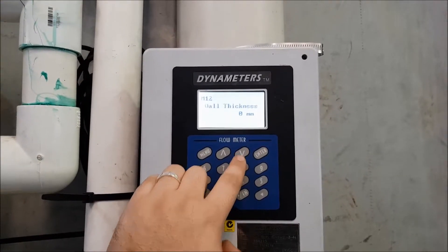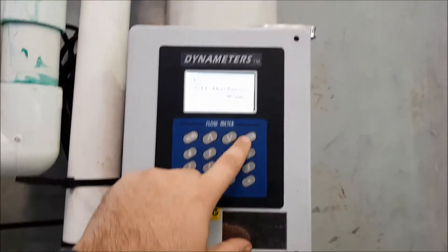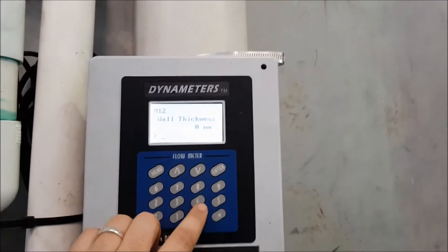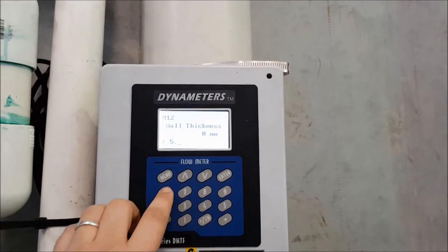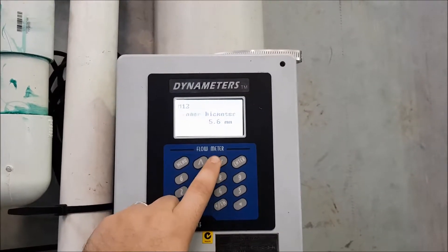Next one, menu 12 is the wall thickness of the pipe. So in this case, I've got 5.6mm wall thickness. Enter. And move on to the next one.